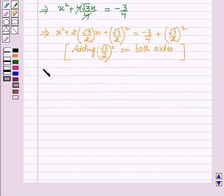This can be written as x plus root 3 by 2 whole square equal to minus 3 by 4 plus 3 by 4.